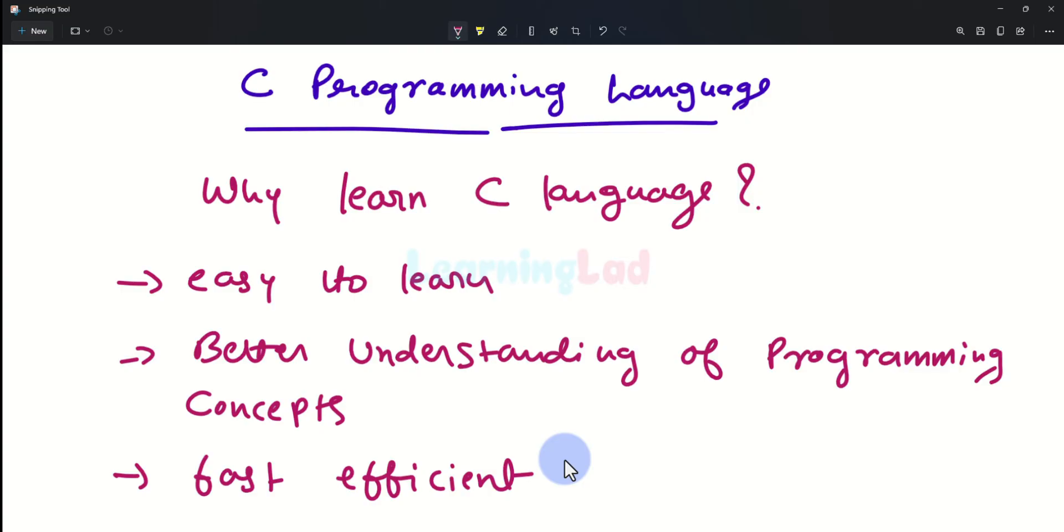For example, the Curiosity rover which was sent to Mars by NASA has most of the code written in C programming language. C is also widely used for developing device drivers, operating systems, and games. So if you know C programming language, then you will have better understanding of programming concepts and also you will be able to create fast and efficient programs.